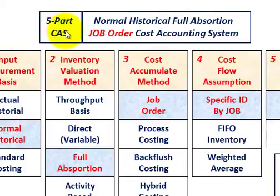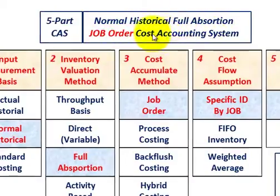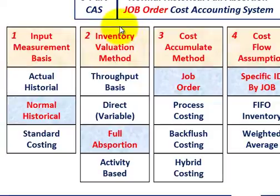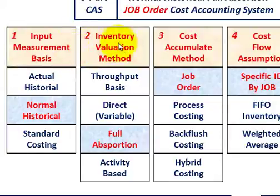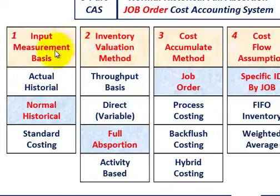What we're going to be going over here is a five-part cost accounting system, and we're going to do it in terms of a normal historical full absorption job order cost accounting system. When you're dealing with cost accounting and these different systems, this gives you an overview of what you should include when you're looking at different cost accounting problems and systems. We'll look at these five parts in terms of this job order, but let's understand what's going on first.